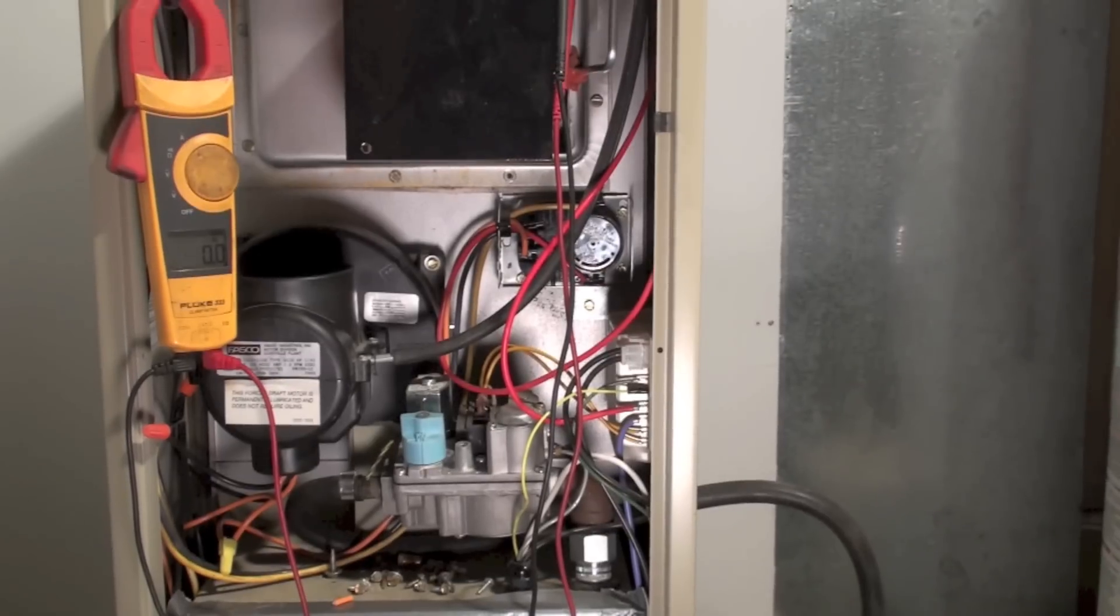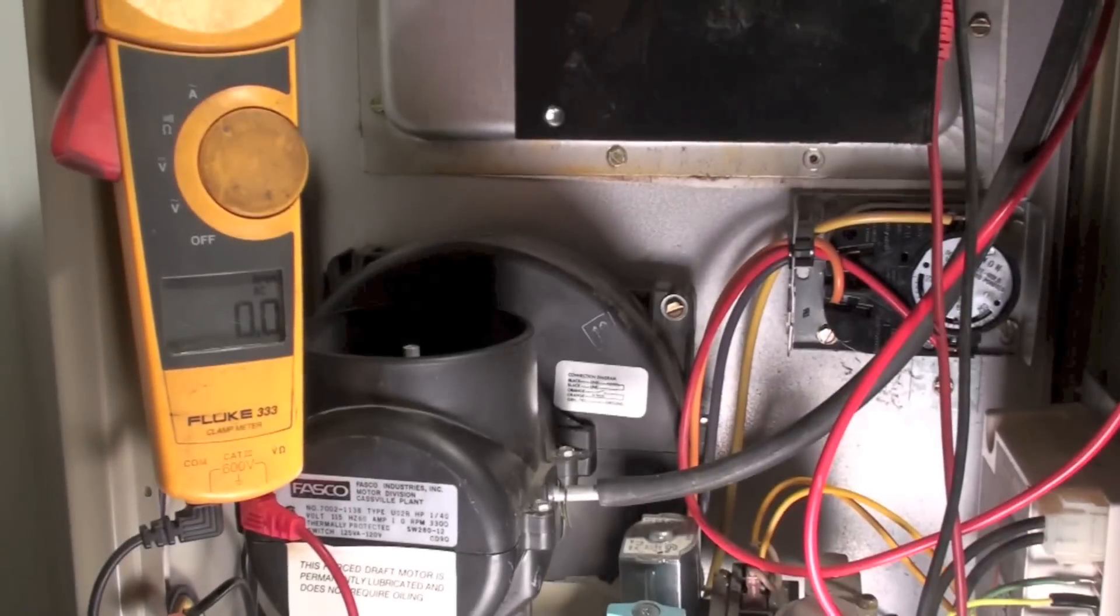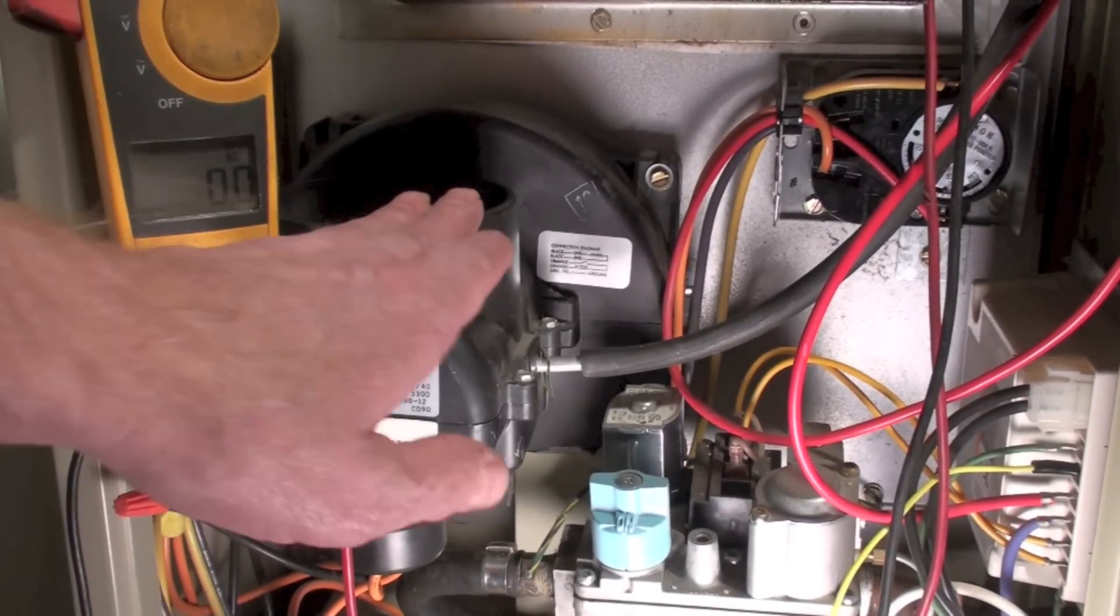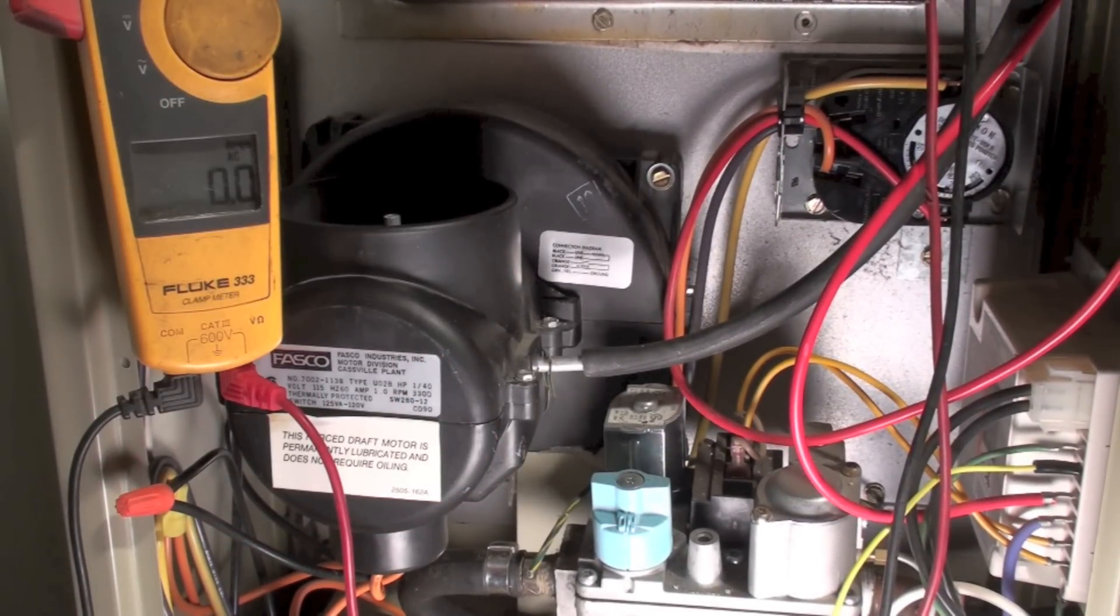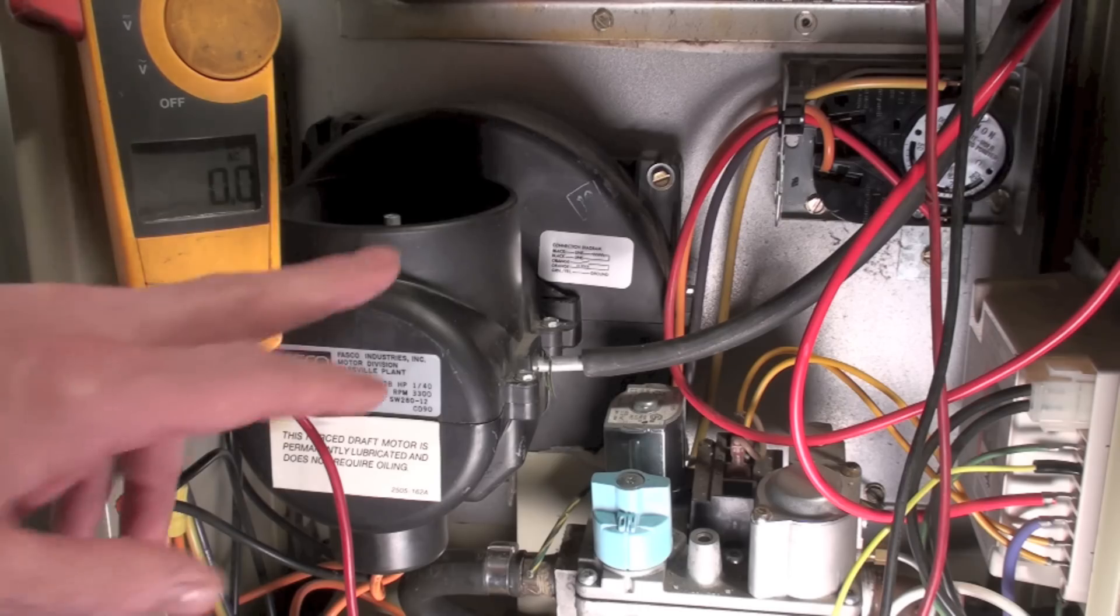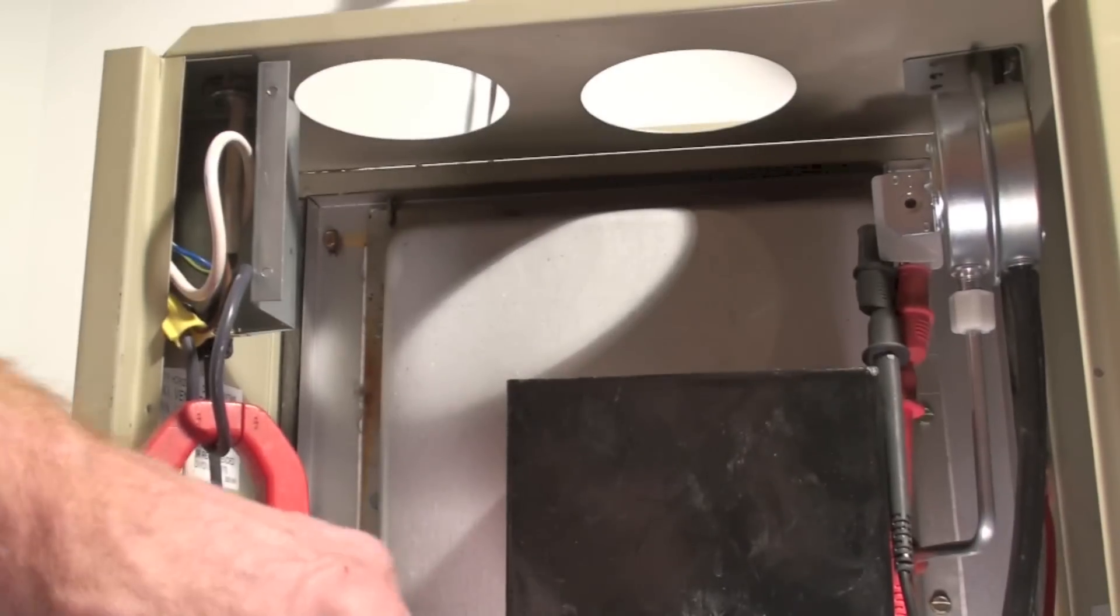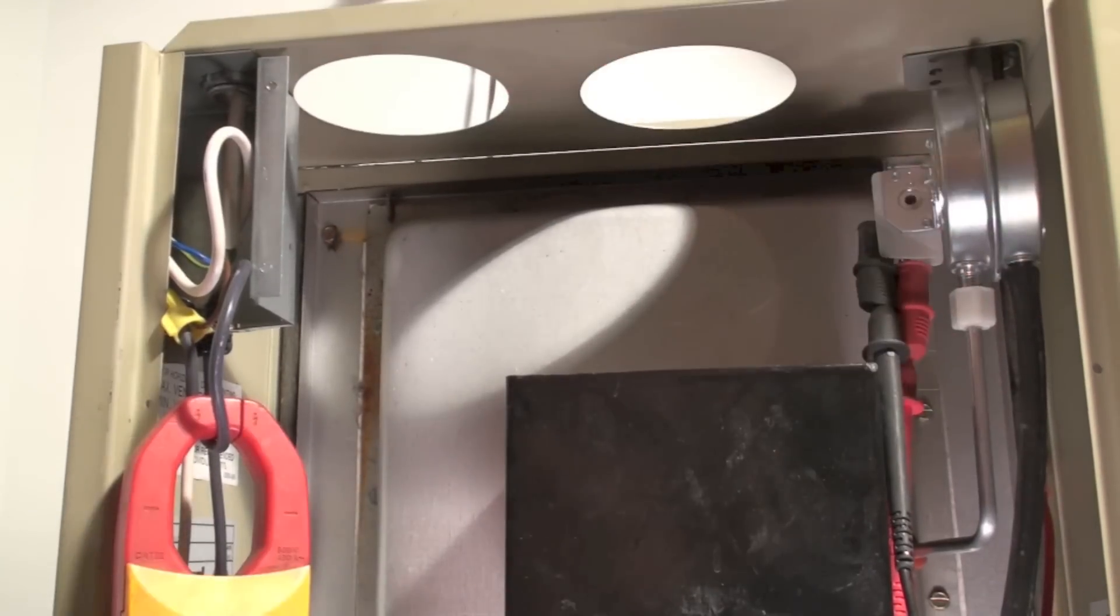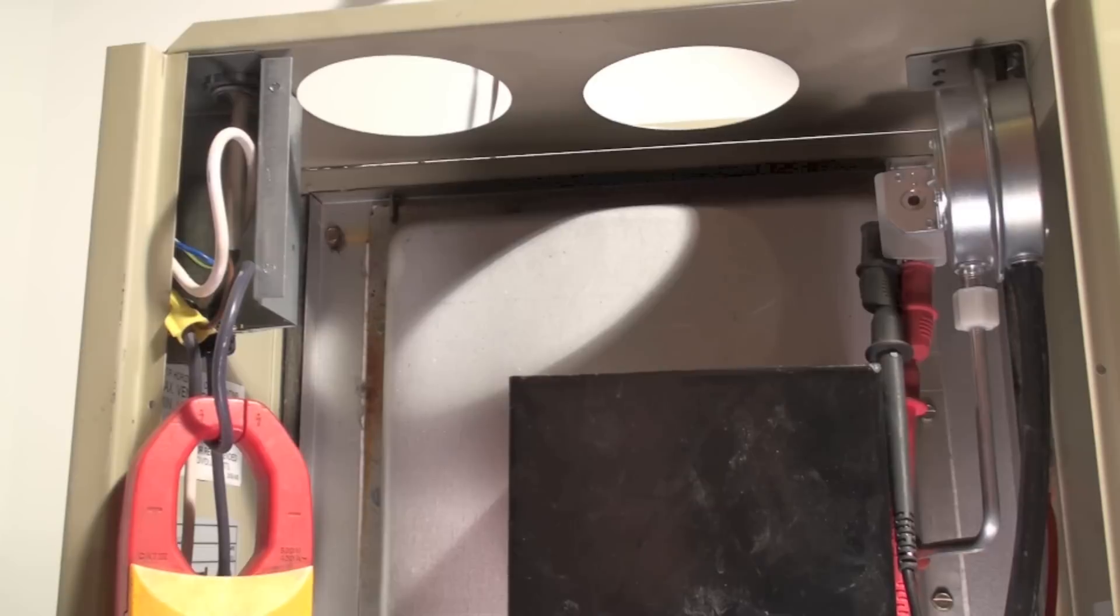It's supposed to shut off if the combustion air inlet, which is right in front of you there, which has a sensing tube right there in the middle of that pipe, goes up to the pressure switch right there and senses if the combustion air inlet is blocked.